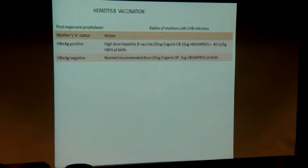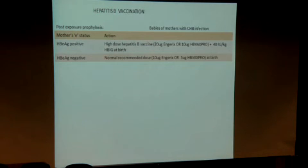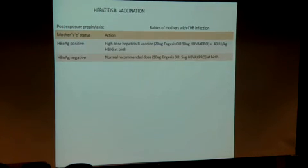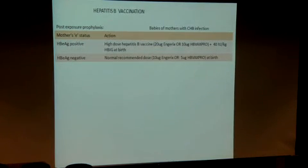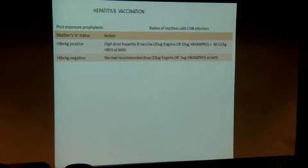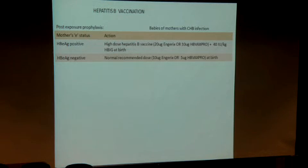For Hepatitis B vaccination in babies of mothers with chronic Hepatitis B infection, Singapore follows this schedule: if a mother is E-antigen positive, the baby is given high-dose vaccine plus HBIG at birth. If the mother is E-antigen negative, the normal vaccination schedule is recommended. In contrast, countries like the United States and England give high-dose Hepatitis B vaccine plus HBIG to any baby whose mother is S-antigen positive, irrespective of E-antigen and E-antibody status.